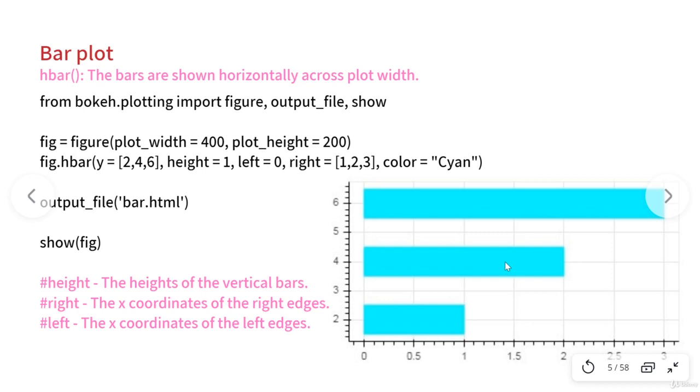Then, the bar plot, again a very common plot. So bar plot, there are two options that are given by the Bokeh library. One, whether you want to produce horizontal bars. Two, or whether you want to go for the vertical bars. Horizontal bars, that means the bars will be shown horizontally across the plot width, and vice versa in case of vertical bar. Again, the code is very simple. You have to make the necessary imports from the bokeh.plotting library.